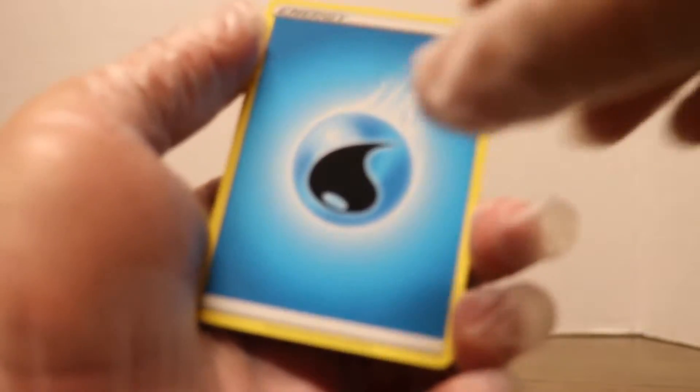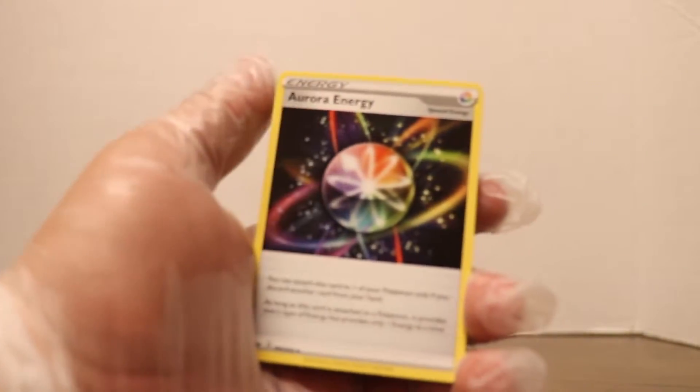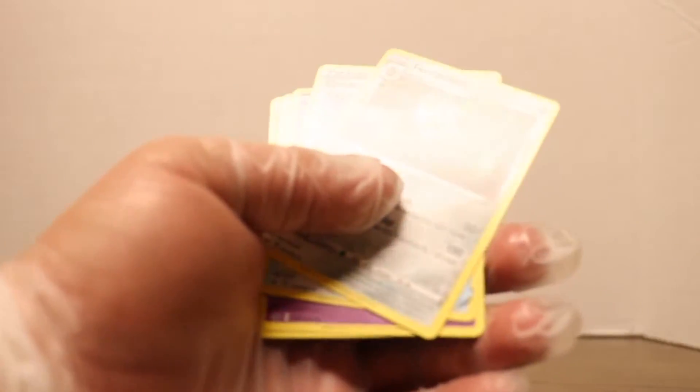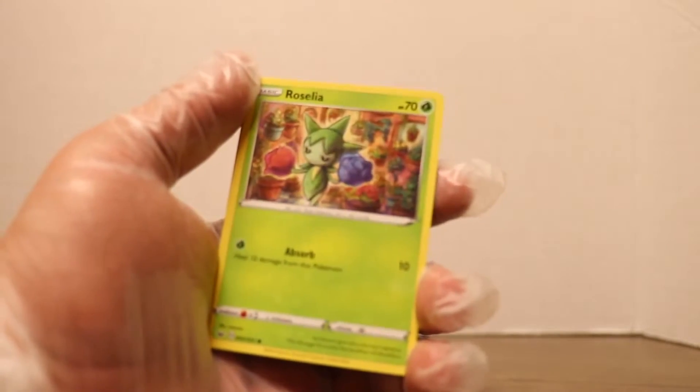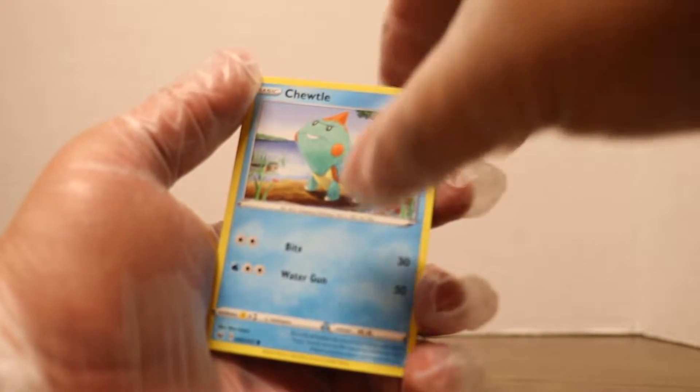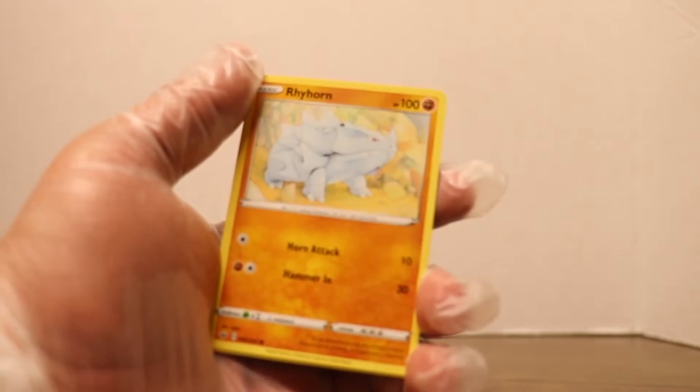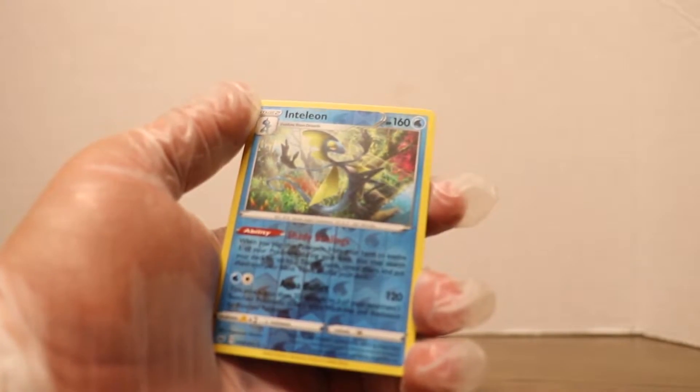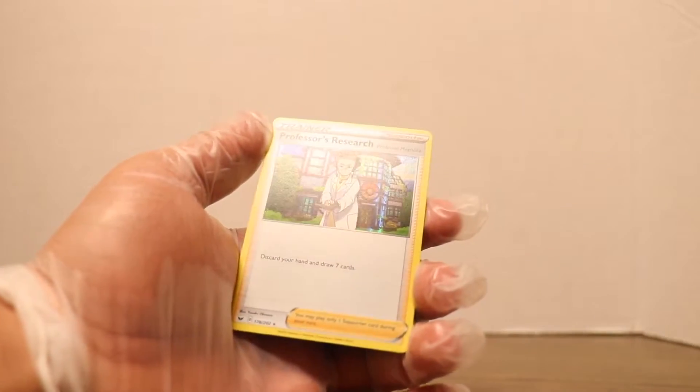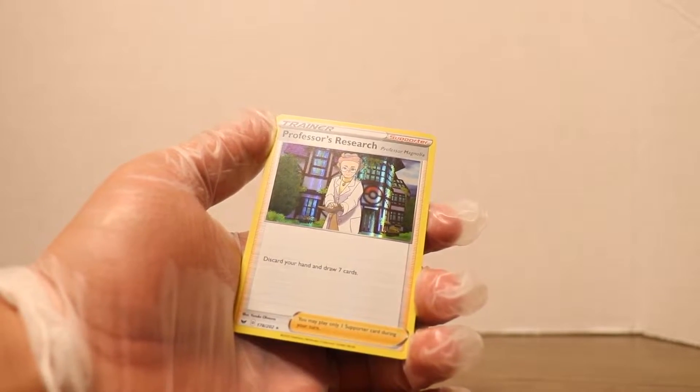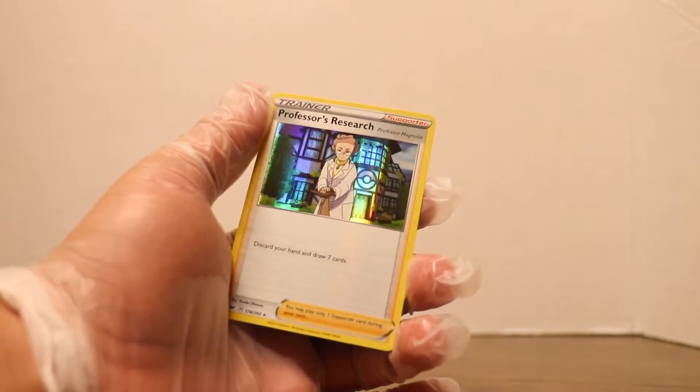Starting off with Water energy. We got Aurora Energy, Ferrothorn, Crushing Hammer, Mawile, Roselia, Chewtle, Blipbug, Rhyhorn, a reverse Inteleon, and a holo Professor's Research. Not bad, that is the first one on that right there. We're still just looking for the full art. If we get a gold card that would be awesome as well, but only time will tell.